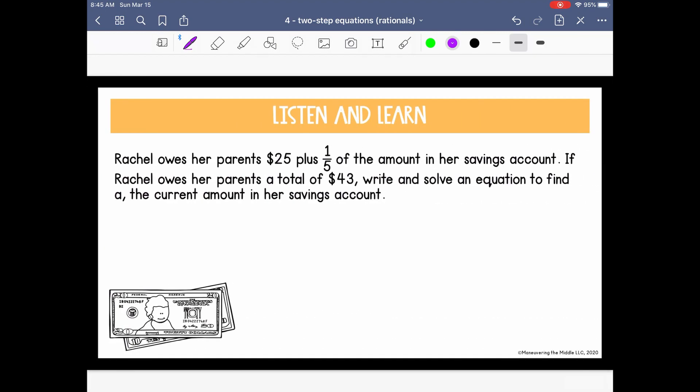Okay, let's apply this to some real-world situations. This tells us that Rachel owes her parents $25 plus 1 fifth of the amount in her savings account. If Rachel owes her parents a total of $43, write and solve an equation to find a, the current amount in her savings account. So let's write what we are looking for. They told us we're trying to find a, which represents the amount in her savings account. Okay, we also know she owes her parents a total of $43, and that's made up of this $25 plus the 1 fifth of the amount in savings.